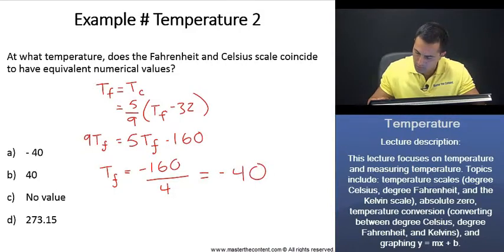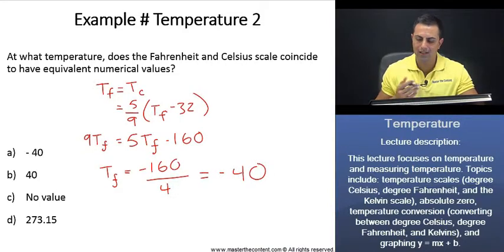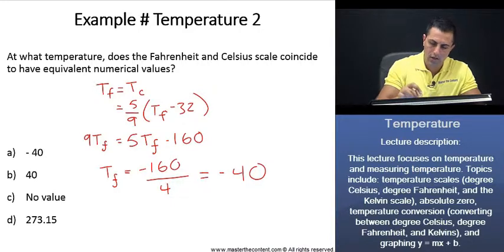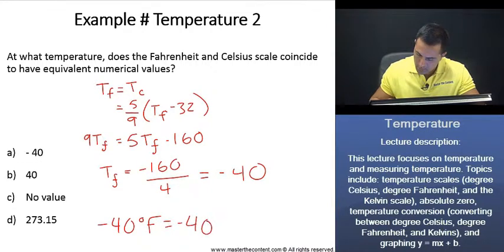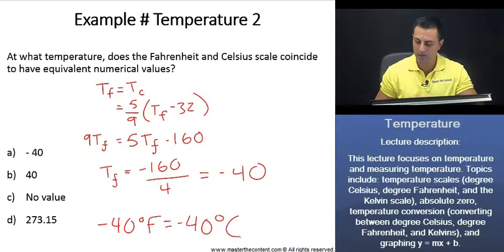We end up with a value of negative 40. Now, what that negative 40 is telling us is that when the temperature is going to be negative 40 degrees Fahrenheit, that's going to be equivalent to a very cold negative 40 degrees Celsius.